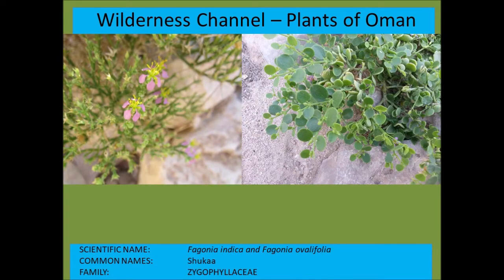Fagonia indica and Fagonia ovalifolia are two species with pretty little flowers. Fagonia ovalifolia, as the name suggests, has oval-shaped leaves. Both are from the Zygophyllaceae — a family with many species in Dhofar.